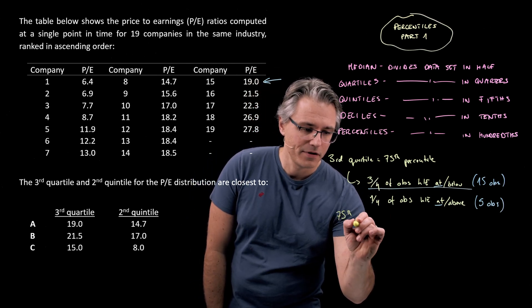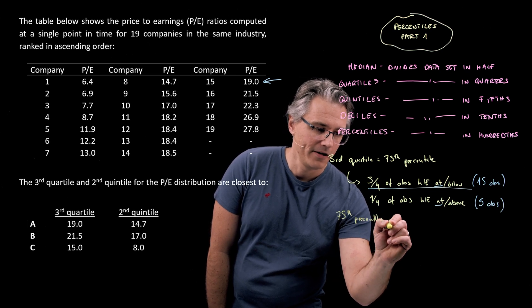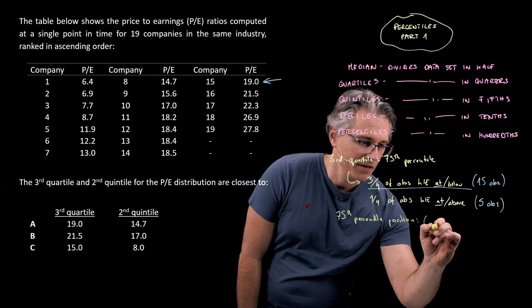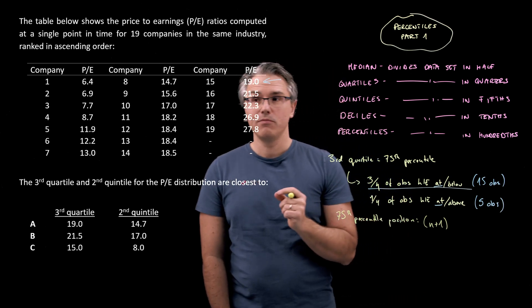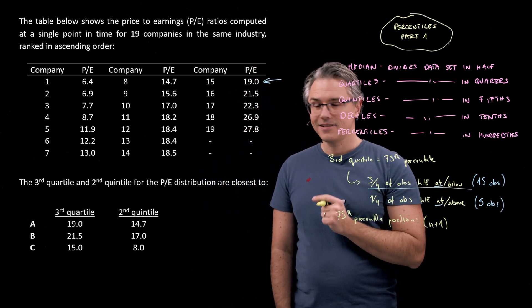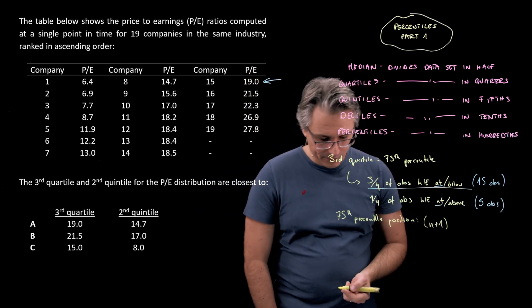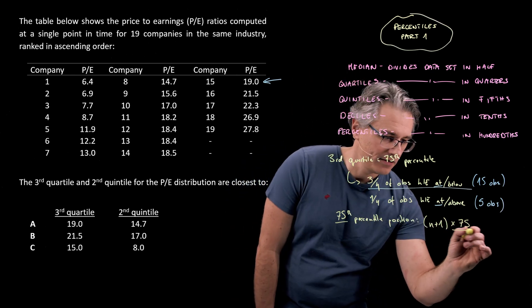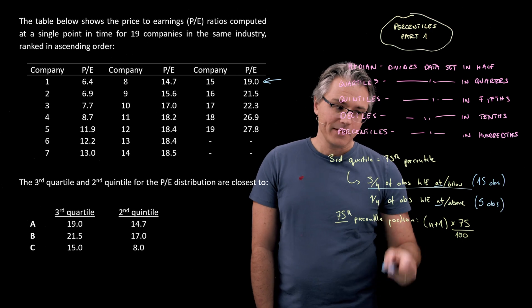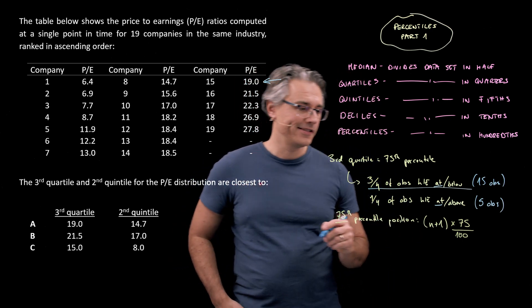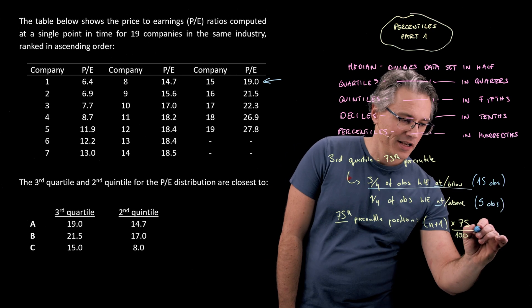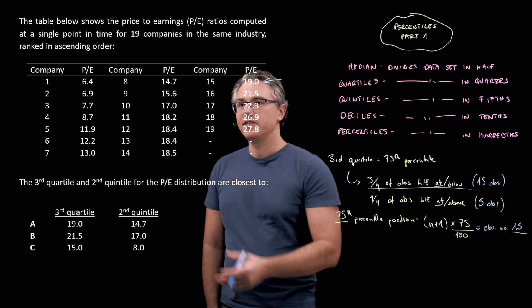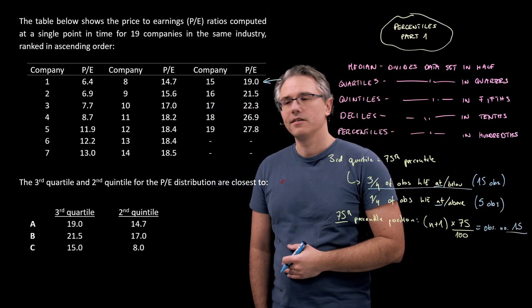But how do we get the position of this percentile? The 75th percentile position is going to be observation number n plus 1—n is the total number of observations, in this case 19—times 75, which I get from the fact that this is the 75th percentile, divided by 100. So 20 times three-quarters, 75 over 100, is observation number 15 when these observations are indeed ranked in ascending order.